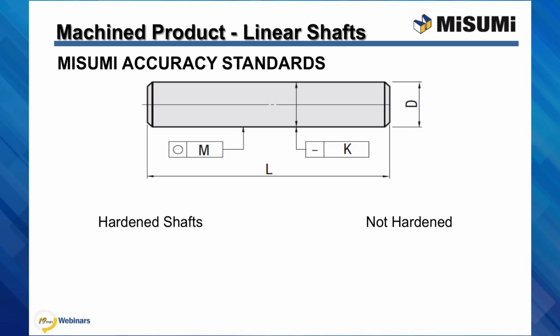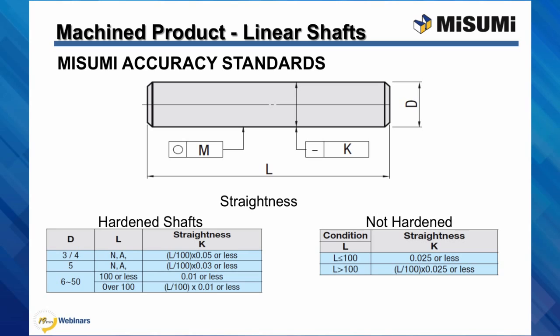The most critical tolerance on a linear shaft is the straightness, as the linear bushing requires a straight shaft in order to travel smoothly during operation. The straightness tolerance for hardened shafts is as low as 0.01 millimeters per 100 millimeters or less. Non-hardened shafts are 0.025 millimeters per 100 millimeters or less.